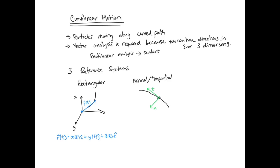The third reference system is polar coordinates. You have a fixed origin and a fixed reference line. The information provided about the particle's position is a positive r, which is the radial distance from the origin to the particle, and an angle which is the counter-clockwise angle between the fixed reference line and the r axis. This is the polar coordinate system.